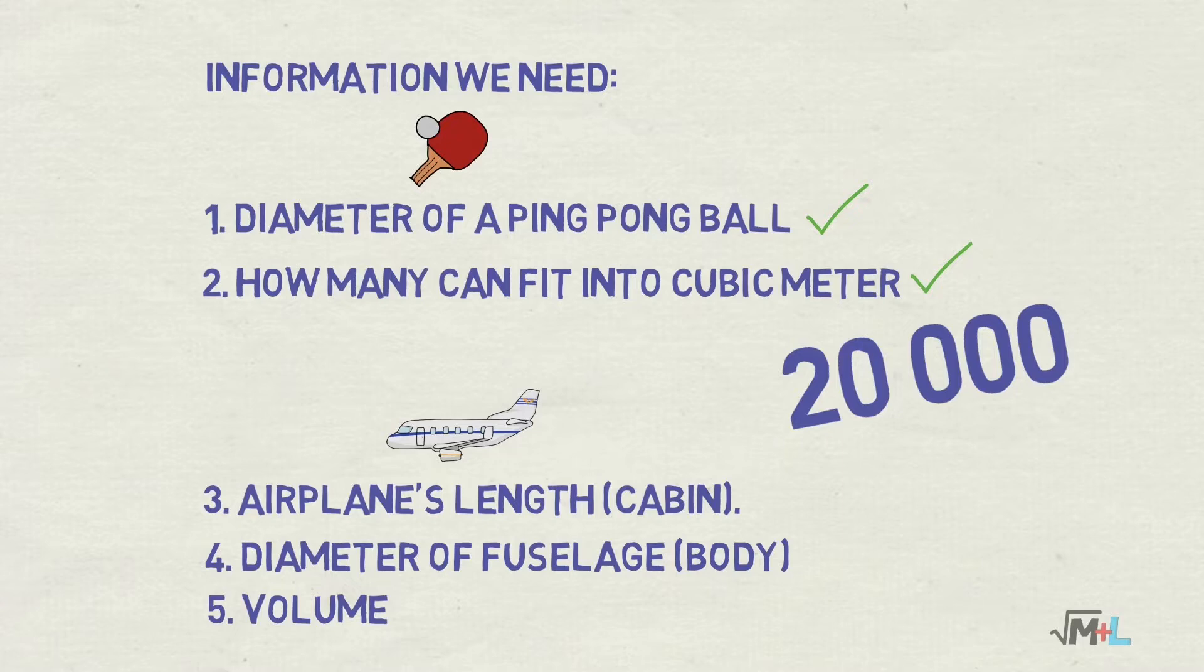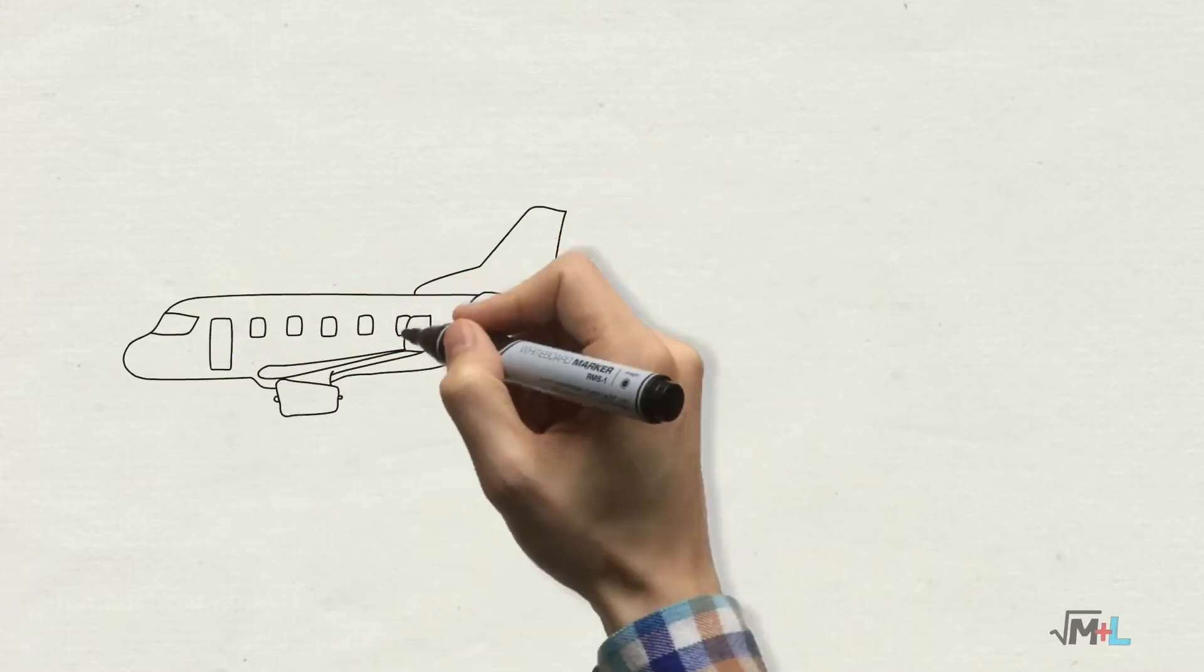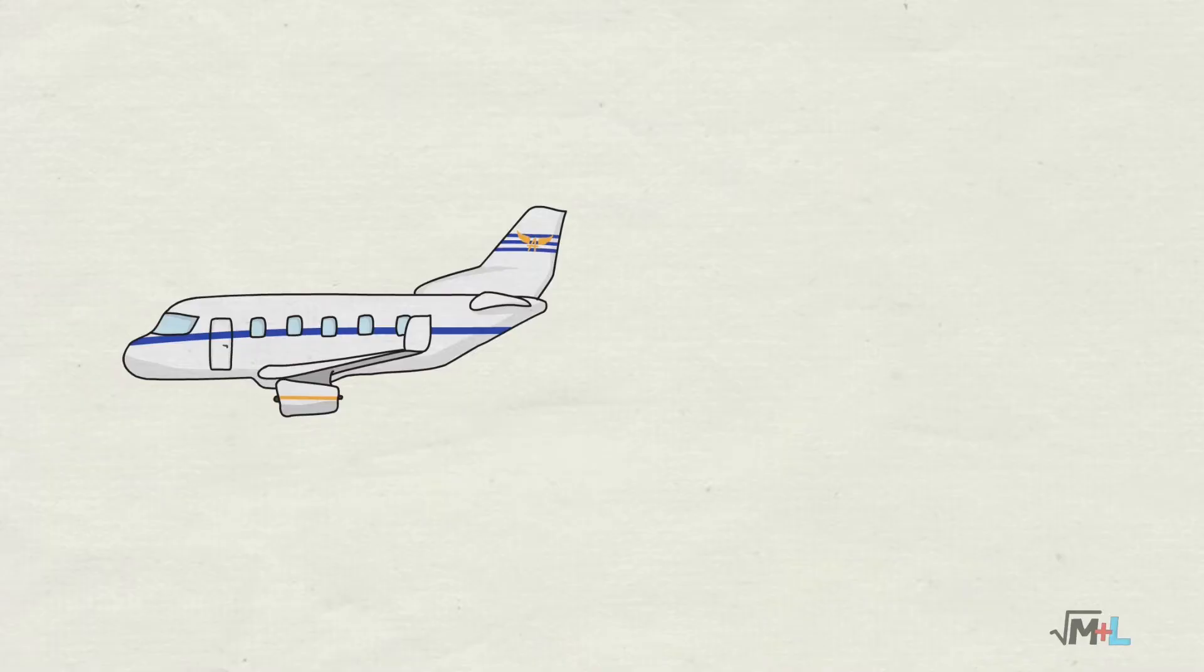Now to the second one, a bit more challenging, estimating volume of the plane that can be filled with ping-pongs. Unlike part 1, this one is ambiguous and even after deciding that we will be sizing Boeing 737, and I will also give you answer for 747, there can be many correct answers.